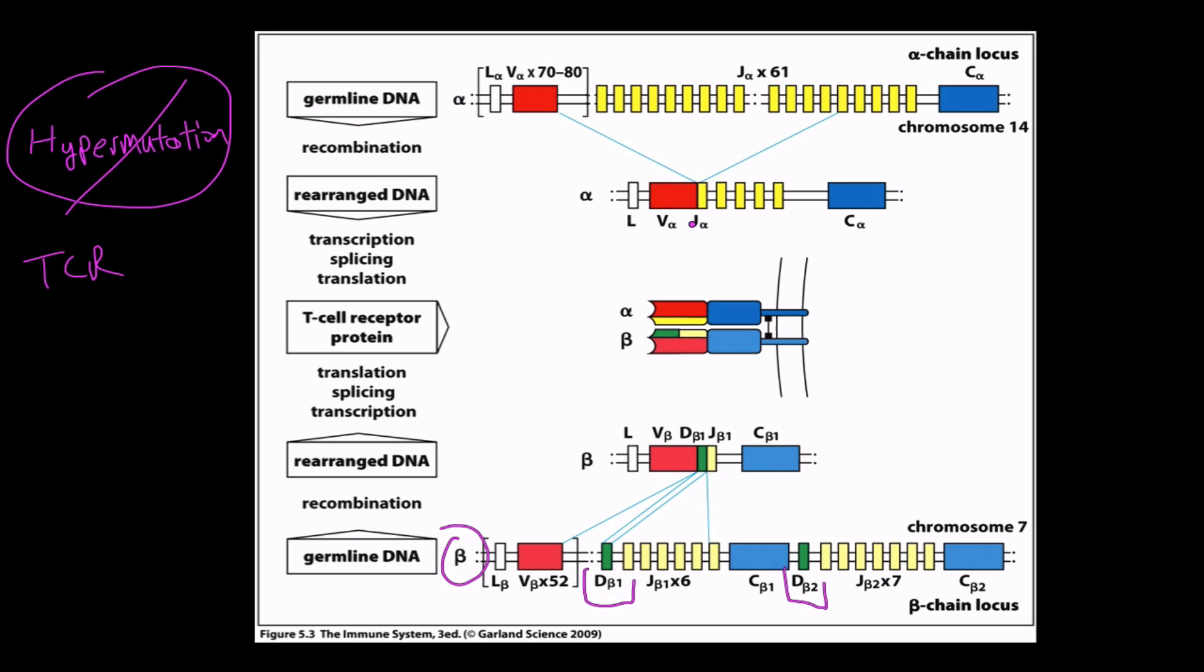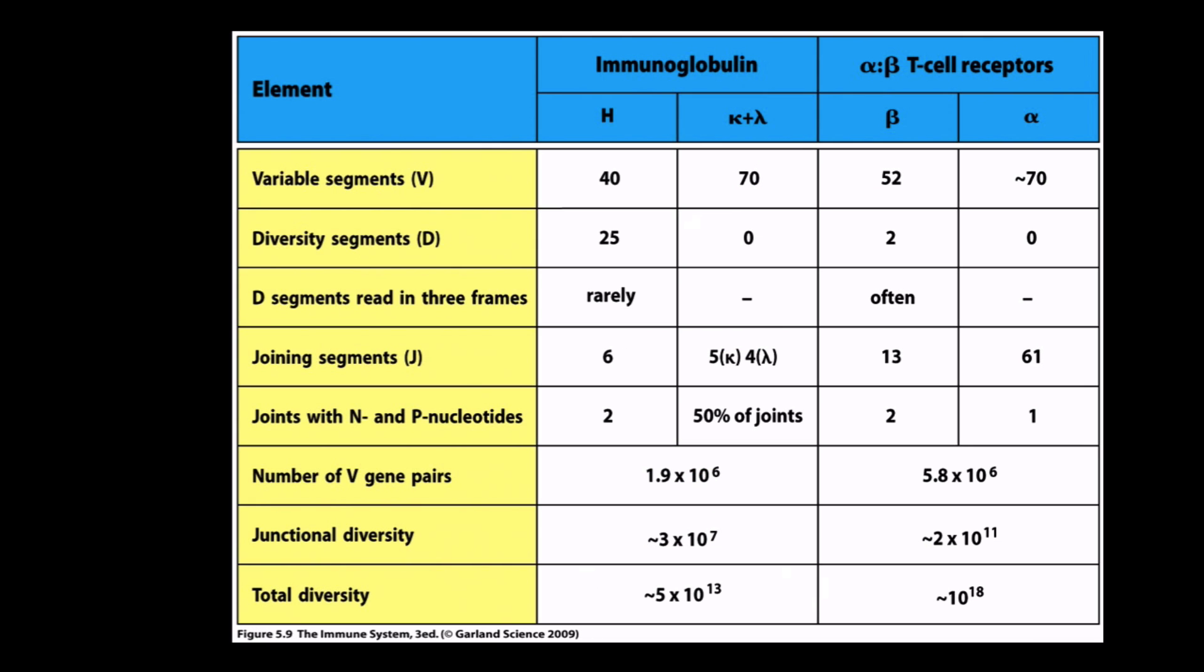What you may have noticed is that there's a lot more segments of genes that they can choose from, and so there's generally speaking going to be more variation in T-cell structure than there is in B cell receptor structures.